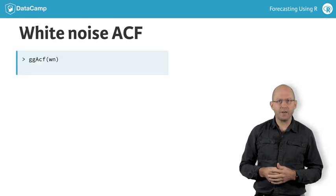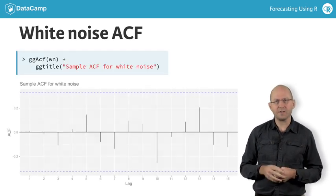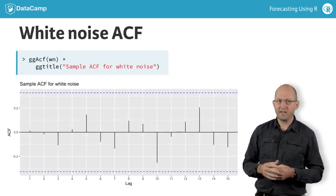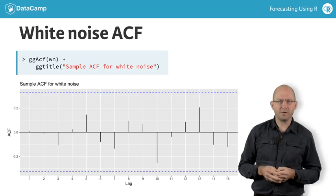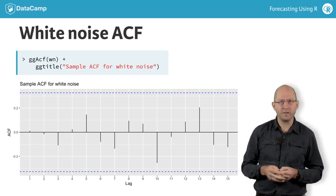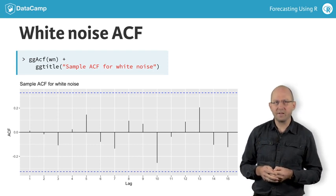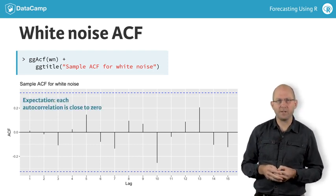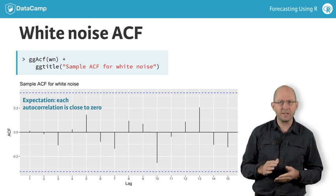The autocorrelation function of white noise consists of many insignificant spikes. Because the data is simply random, we expect correlations between observations to be close to zero. The dashed blue lines are there to show us how large a spike has to be before we can consider it significantly different from zero.